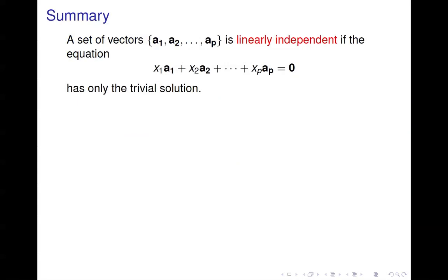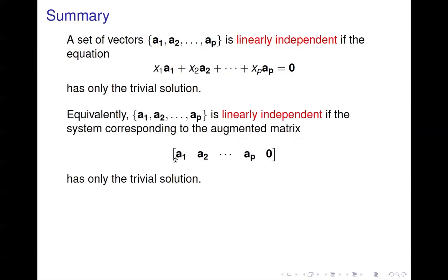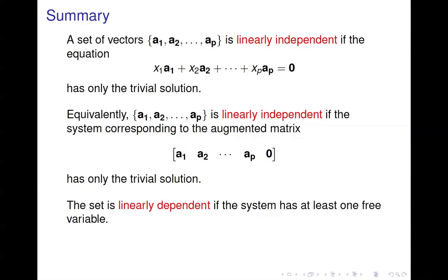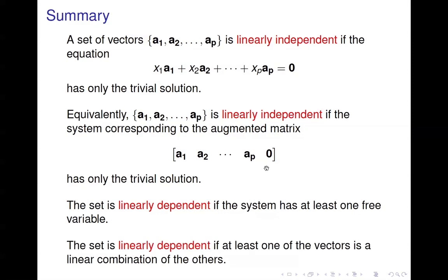In summary, a set of vectors is linearly independent if you take a linear combination, set it equal to zero, and get only the trivial solution — all x's equal to zero. Equivalently, throw all the vectors into an augmented matrix with the zero vector as the augmented column, solve the system, and get only the trivial solution. It's linearly dependent if the system has at least one free variable, giving infinitely many solutions. And a set is linearly dependent if at least one vector is a linear combination of the others. That's Section 1.7.